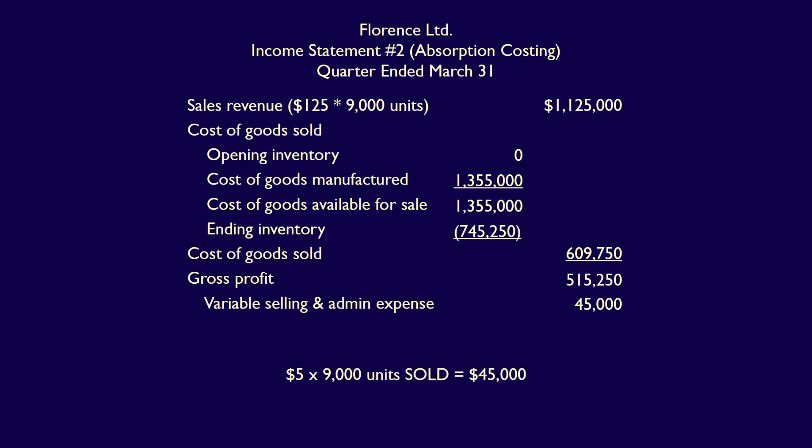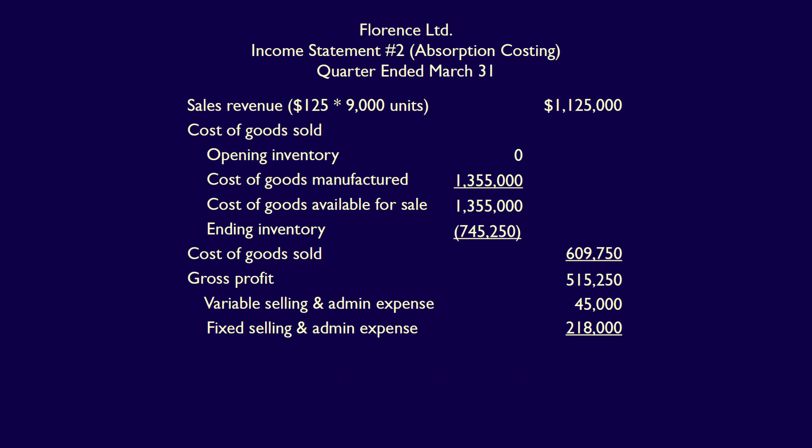Now we deduct the period costs. First is variable selling and admin expense, calculated as 9,000 units sold multiplied by $5 per unit, which equals $45,000. We then deduct the fixed selling and admin expense of $218,000. Operating income equals gross profit minus period costs: $515,250 minus $45,000 minus $218,000, which equals operating income of $252,250.